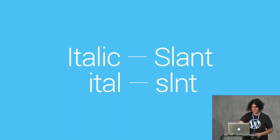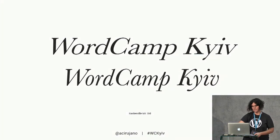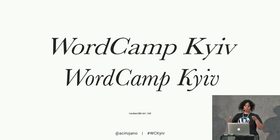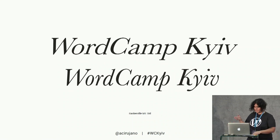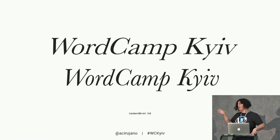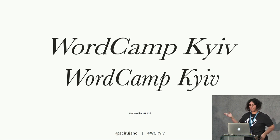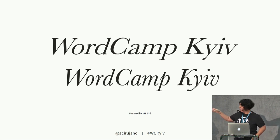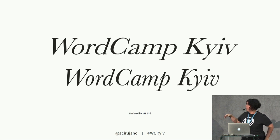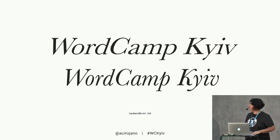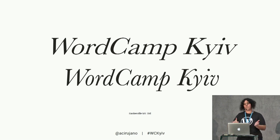Let's see the italic and slant axes. You can set more or less slanted text, and you can set italics. You can tell the difference between slanted text and italic — for example, the letter 'a' and the letter 'p' are so different. It's not the same: slanted text versus real italics.